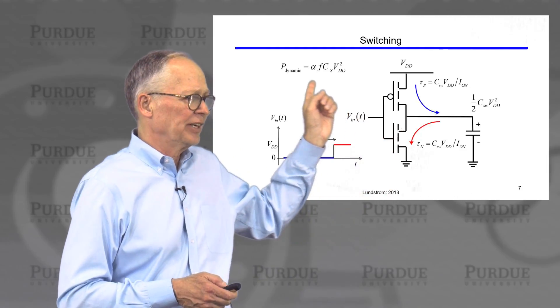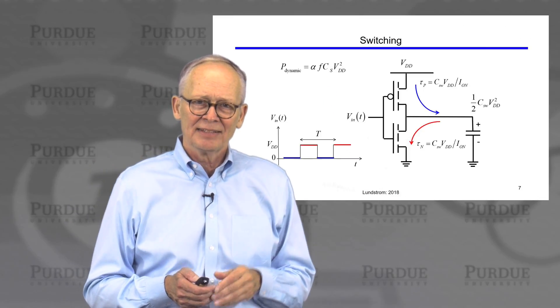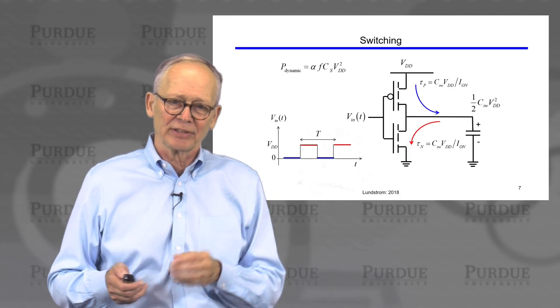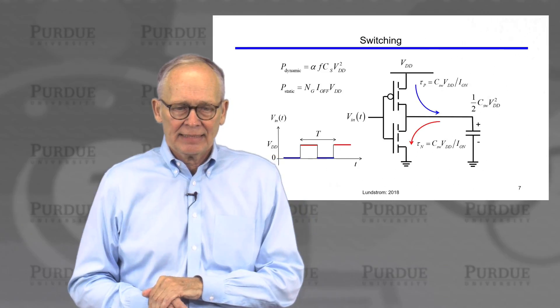the power dissipation in this dynamic switching operation is proportional to frequency times capacitance times voltage squared. And there's a factor here, alpha, the activity coefficient, which represents the fraction of the time that this particular gate is switching.